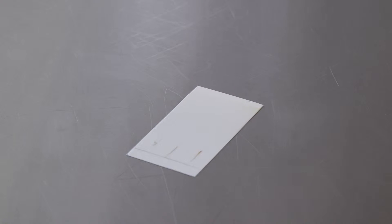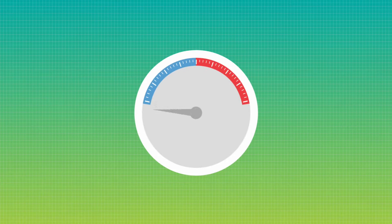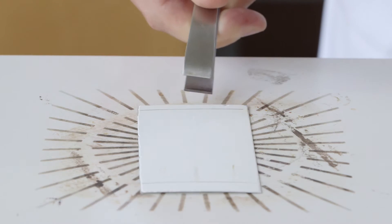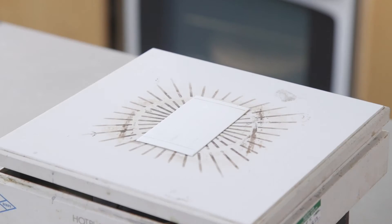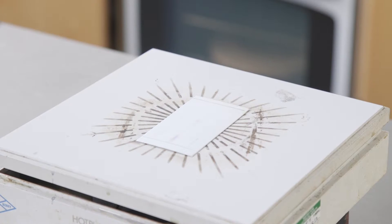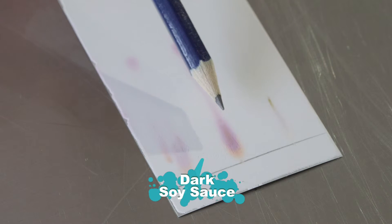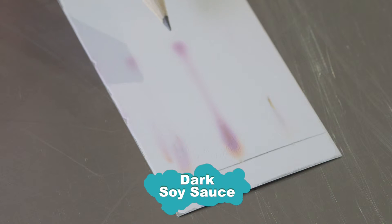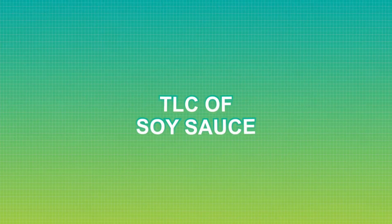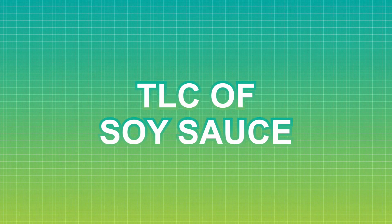You dip the plate into the solution. It is harmful, so this should be done in a fume cupboard. We let it dry again, but still there is nothing to be seen. This is because the reaction needs heat to work. We place the TLC plates on a hot plate at 60 to 70 degrees. You can now see that spots have appeared at different points on the TLC plate. Each spot represents a different amino acid.